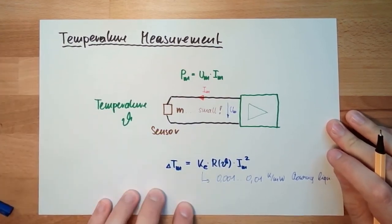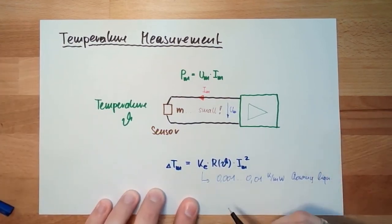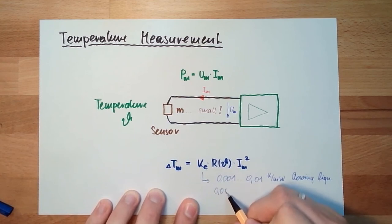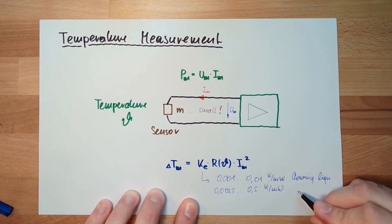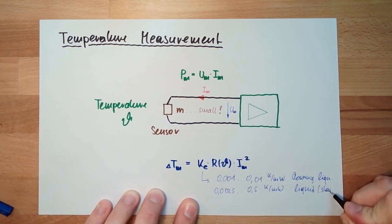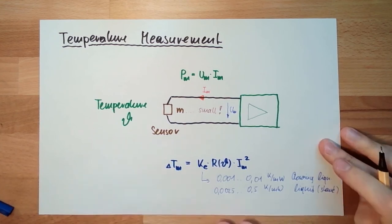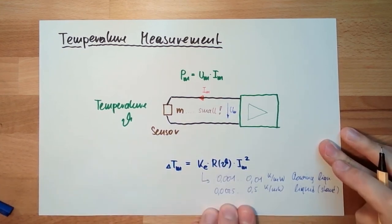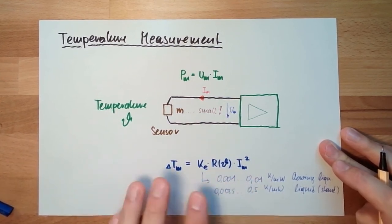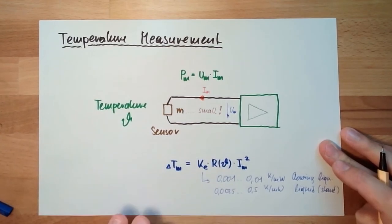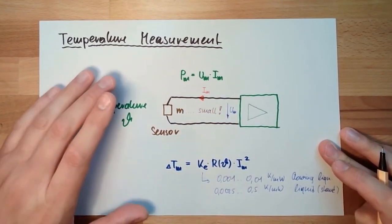If it's in standstill, we are at 0.0025 up to 0.5 Kelvin by milliwatt. This is liquid standstill liquid. So we are a little bit above this. Which liquid, it depends a little bit on which liquid and how the sensor is formed and so on. If the heat can be put away very fast.